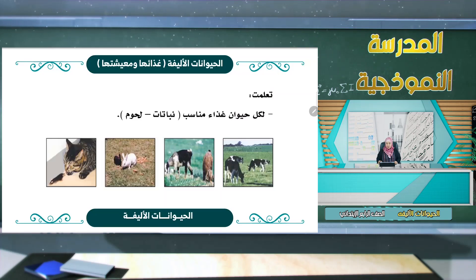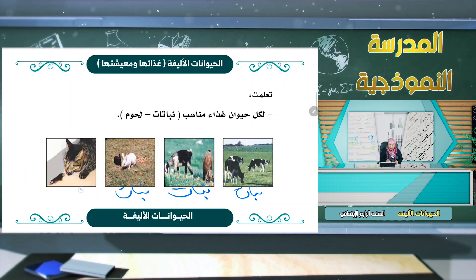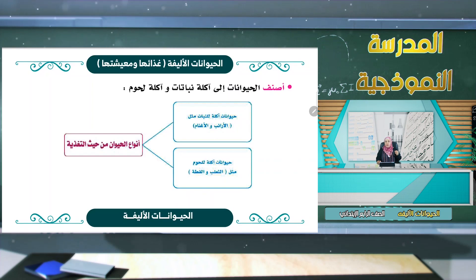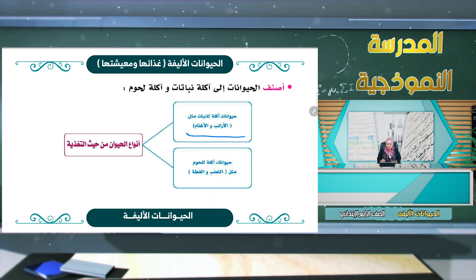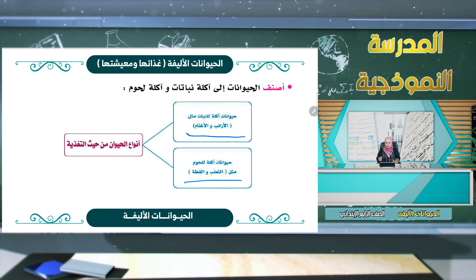تعلمنا أن لكل حيوان غذاءً مناسباً: بعضها يتغذى على النبات وبعضها يتغذى على اللحوم. نصنف الحيوانات إلى آكلة نباتات وآكلة لحوم. آكلة النبات كالأرانب والأغنام والأبقار، وآكلة اللحوم كالثعلب والقطة.